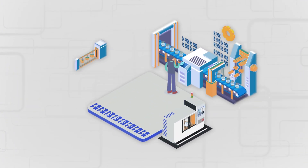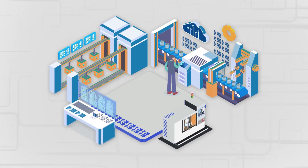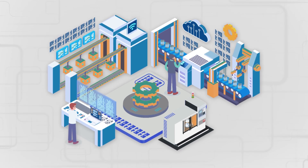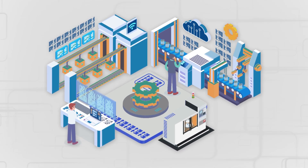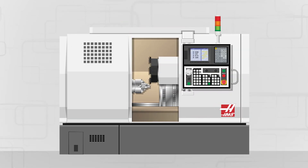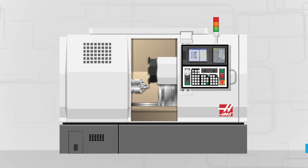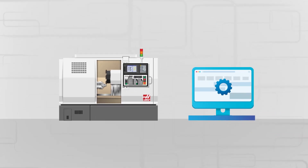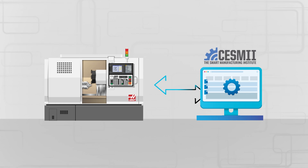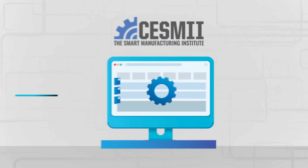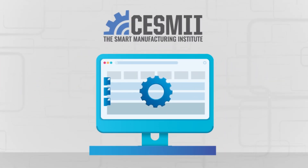Small and mid-sized manufacturing companies are eager to take advantage of smart manufacturing strategies, and now it's quick and easy to collect data from Haas CNC machines for the SESME Smart Manufacturing Interoperability Platform, commonly known as the SESME SMIP.